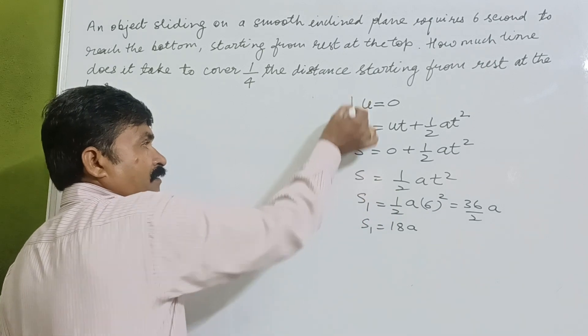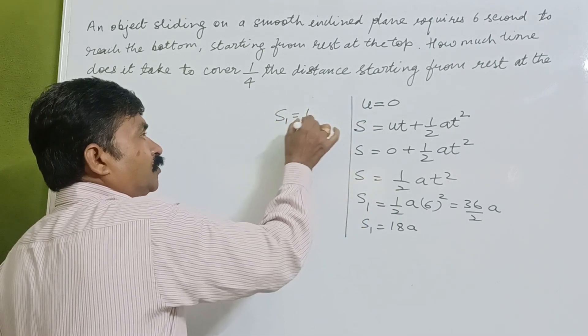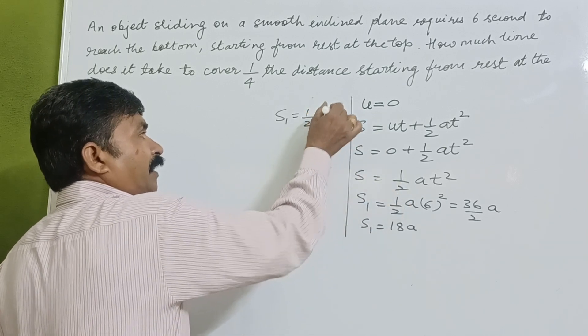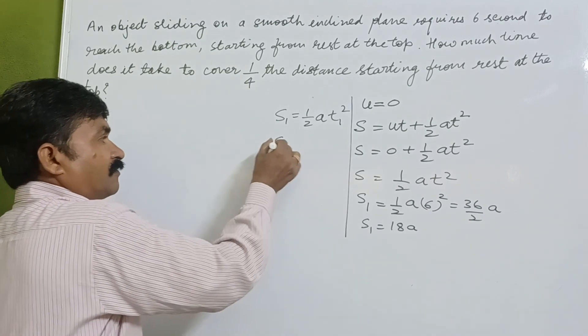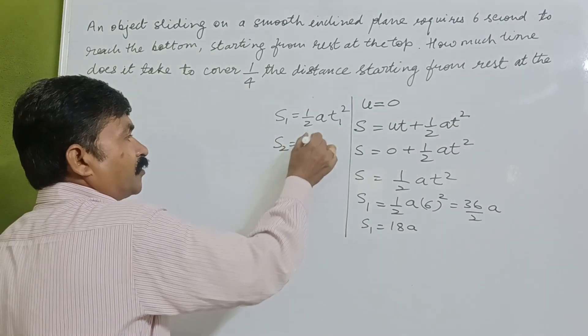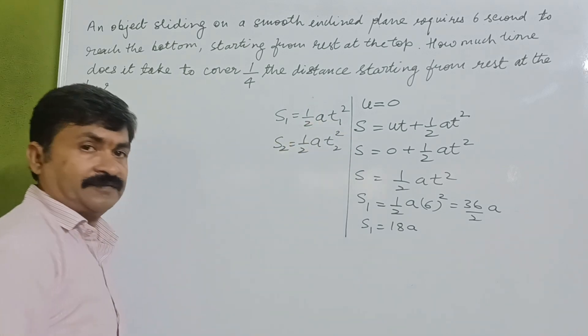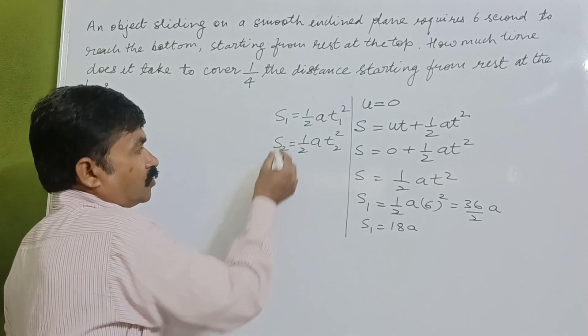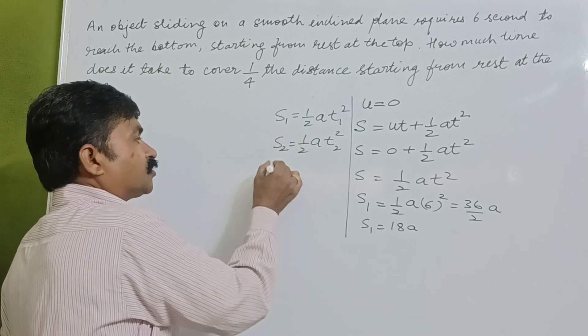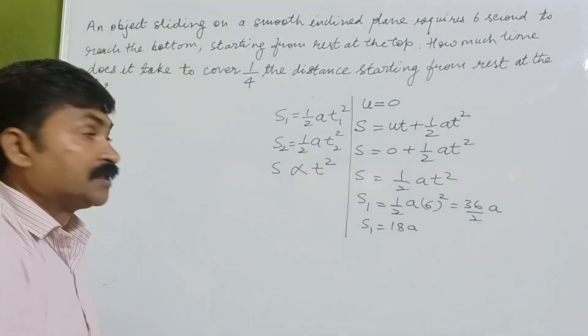Suppose if we have two distances: s1 equals 1/2 at1², and another distance s2 which is 1/2 at2². This 1/2 a, which is in terms of g, is constant. So we can say directly s is directly proportional to t².